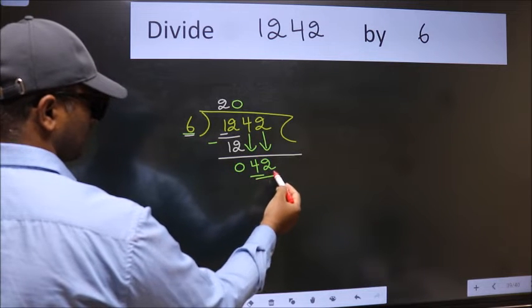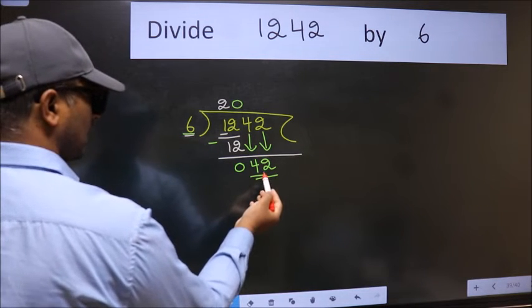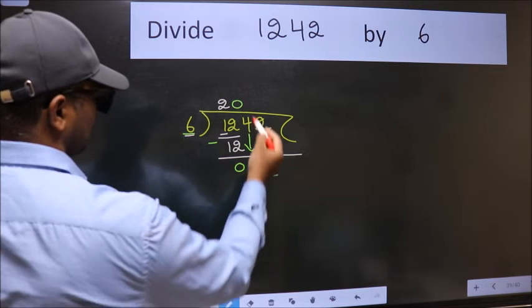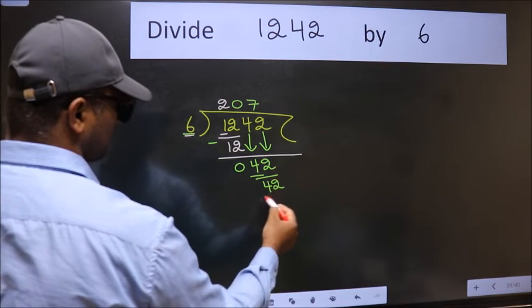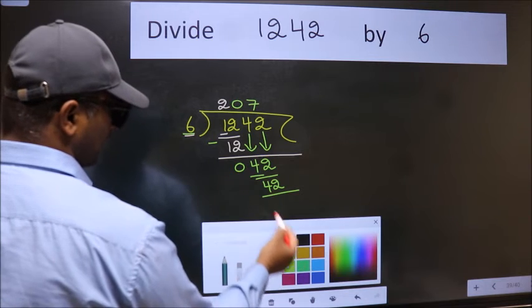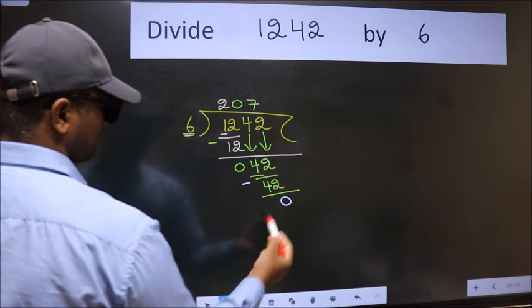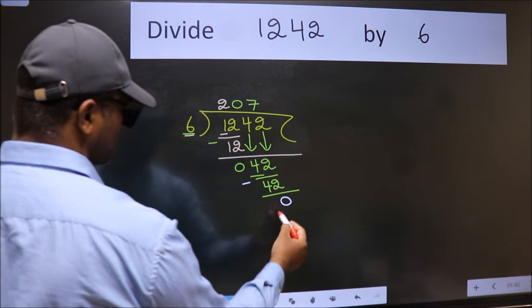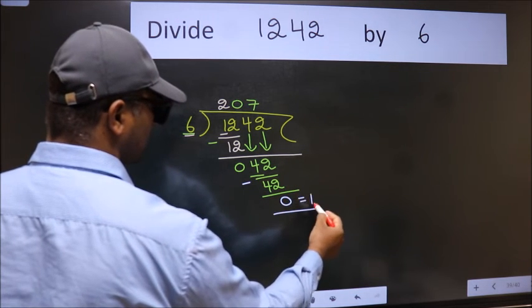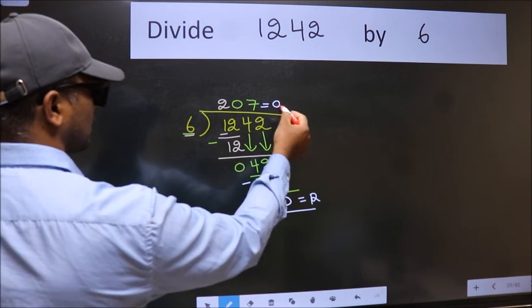When do we get 42 in the 6 table? 6 times 7 is 42. Now we subtract and get 0. No more numbers to bring down, so we stop here. This is our remainder, and this is our quotient.